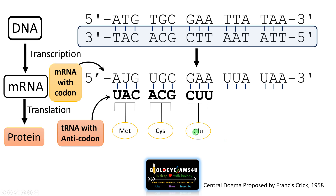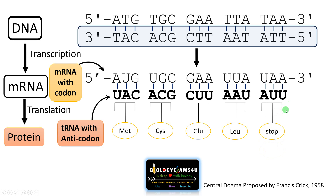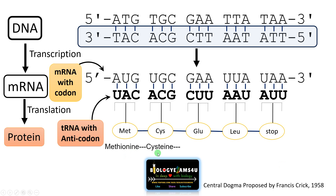The same thing happens, adding further amino acids. Finally, UAA is a stop codon — it doesn't code for an amino acid, thus stopping the translation process or protein synthesis. Now we have a polypeptide joined by peptide bonds, made up of amino acids. The amino acid sequence is methionine, cysteine, glutamic acid, leucine, then the stop codon. So this much is the amino acid sequence.